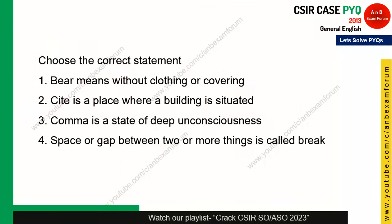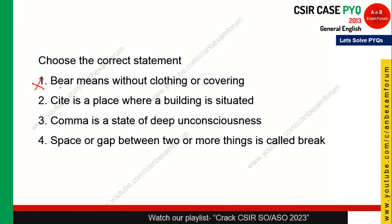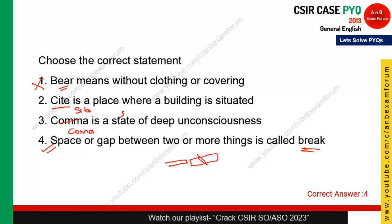Choose the correct statement. Option 1 says 'BM means without clothing and covering' — incorrect, BM refers to an animal. Option 2 says 'cite is a place where a building is situated' — incorrect; 'site' (S-I-T-E) is the correct spelling. Option 3 says 'comma is a state of deep unconsciousness' — incorrect; 'coma' (C-O-M-A) is unconsciousness, while 'comma' (C-O-M-M-A) is a punctuation mark. Option 4 — 'space or gap between two things is called a break' — is correct. So option 4 is the answer.